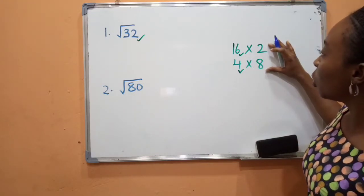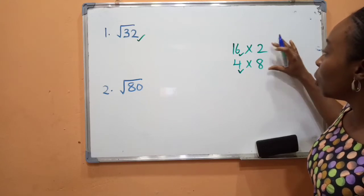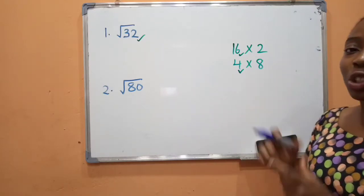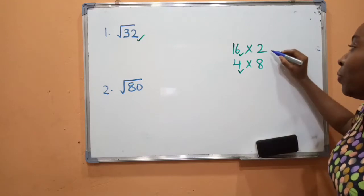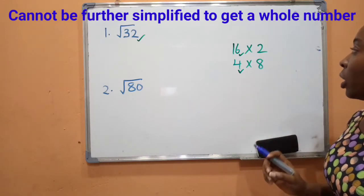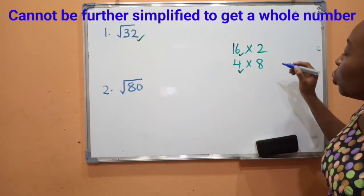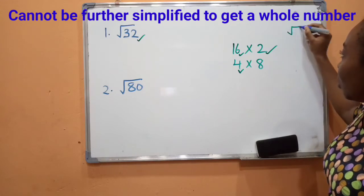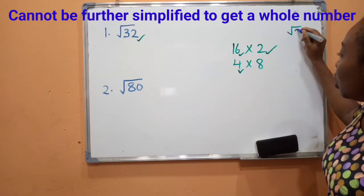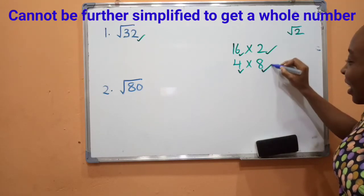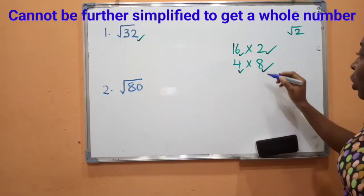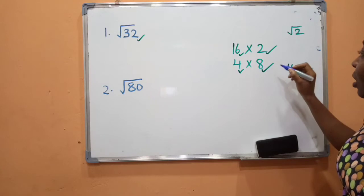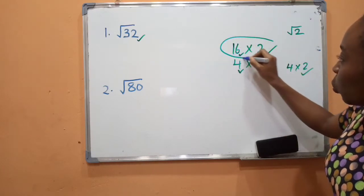The second condition I'm going to talk about now is going to determine which one we choose. The second condition is: you need to ensure that the one that is not a perfect square cannot be further simplified. Look at this — we have two. Two cannot be further simplified. But we have eight here; we can further simplify eight, though it's not a perfect square. By the time you say 4 times 2, you're going to get 8. So that means we are going to go with 16 times 2. This is the right one.